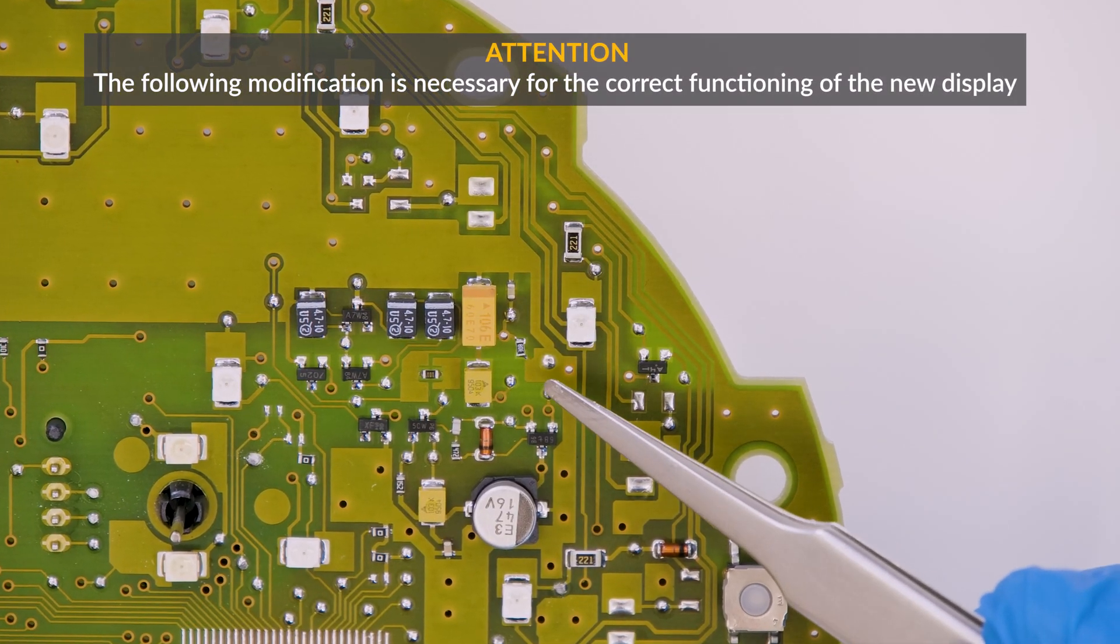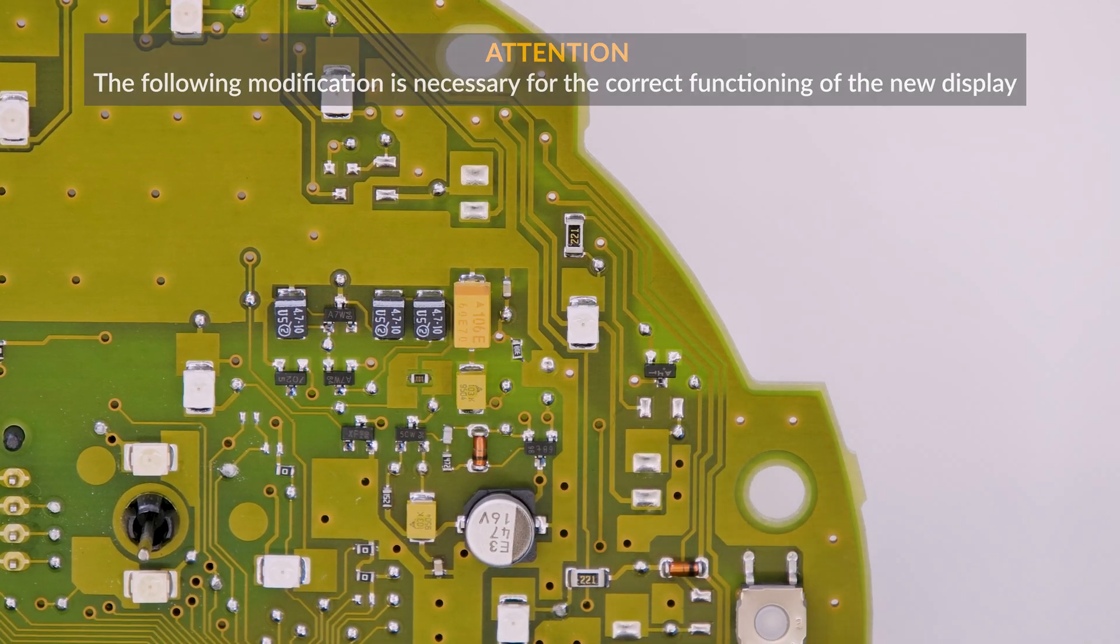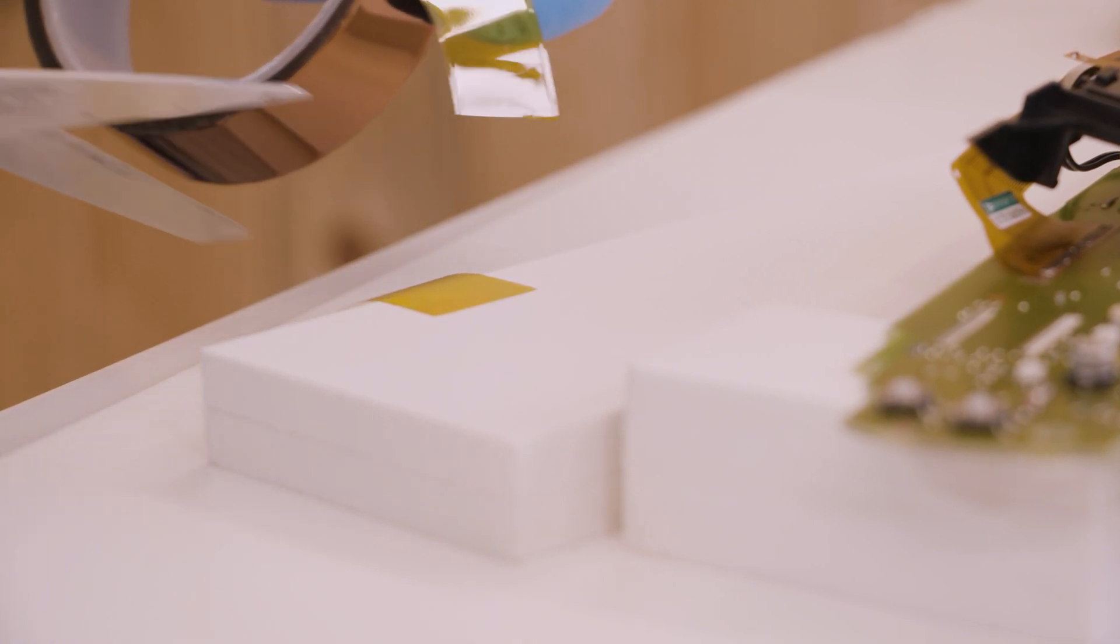For the correct functioning of the new display, it's necessary to remove the resistor pointed. Thermally insulate the components around with some pieces of Captain tape.